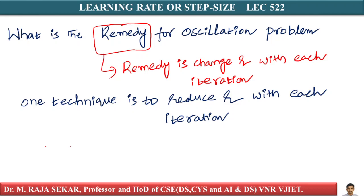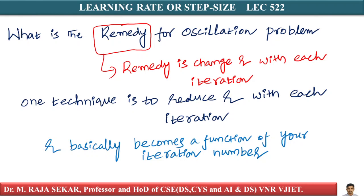When you reduce r, what happens? First time, you probably jump to the other side. But since you are reducing r, you will not make a full jump, but come somewhere closer to x*. R basically becomes a function of your iteration number. This problem occurs more and more as you come closer to x*. So you make your learning rate a function, r = f(i), where i is the iteration such that as i increases, r should reduce.